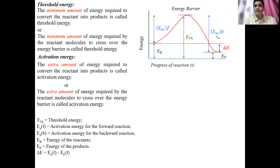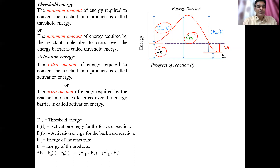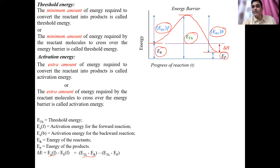The activation energy for the forward direction equals the threshold energy minus the energy of the reactant: E_A(f) = E_threshold − E_R. Similarly, the activation energy for the backward direction equals the threshold energy minus the energy of the product: E_A(b) = E_threshold − E_P. Substituting both into the delta H expression, the threshold energy terms cancel out.